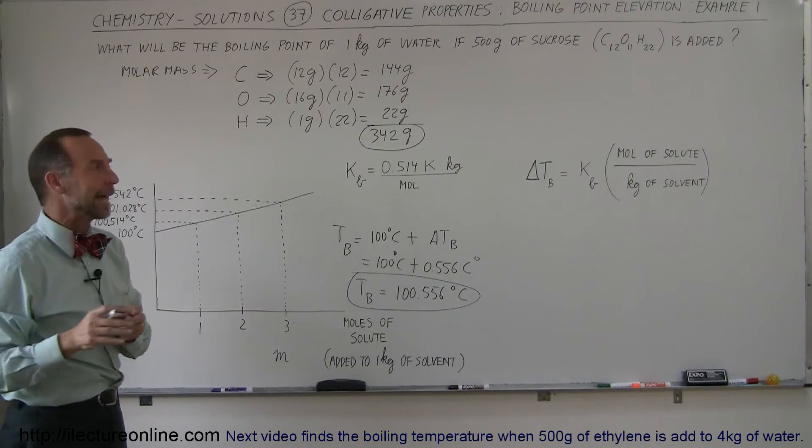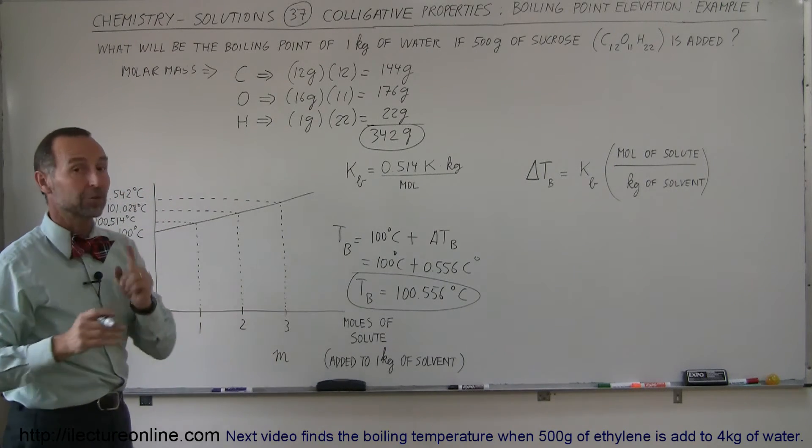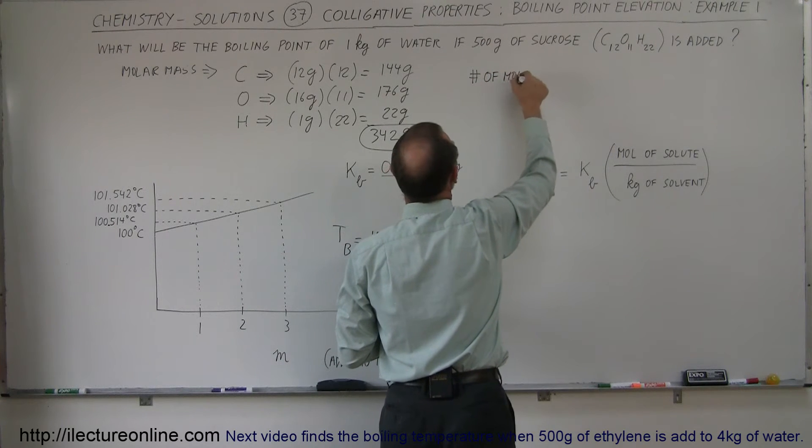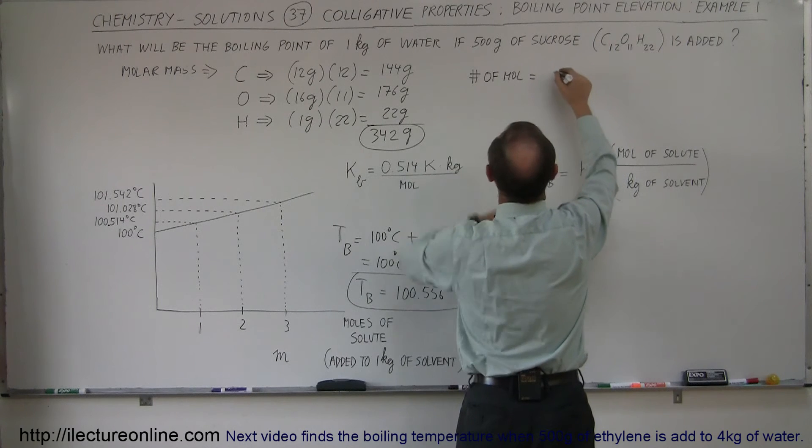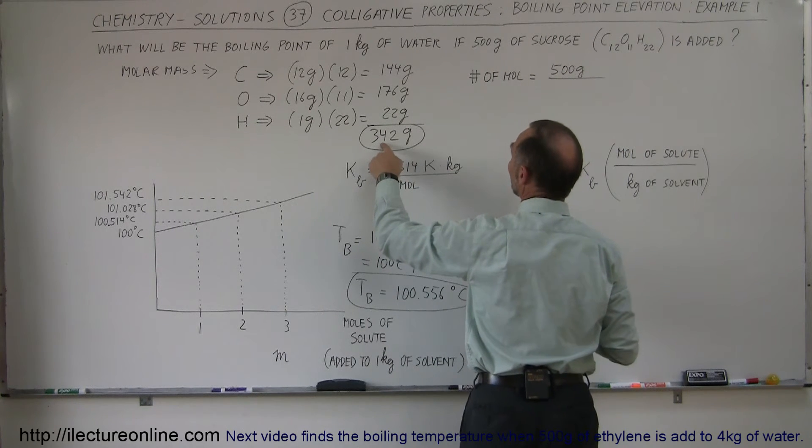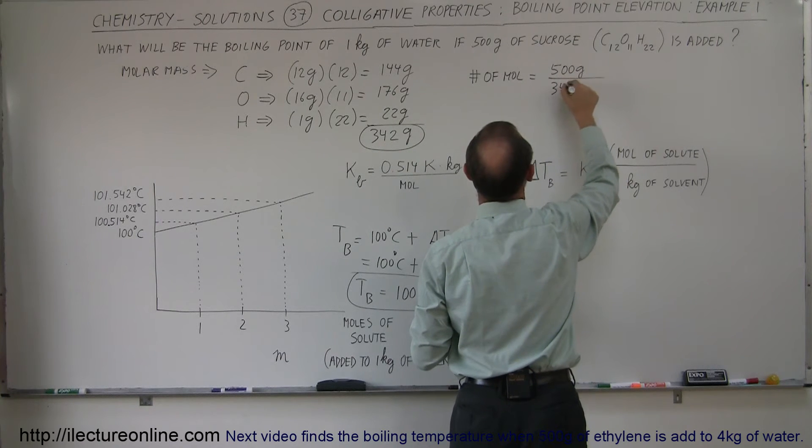So how many moles are we adding if we add 500 grams? To find that, we need to get this equation together. So the number of moles of sucrose is equal to the mass added, which would be 500 grams, divided by the number of grams per mole.